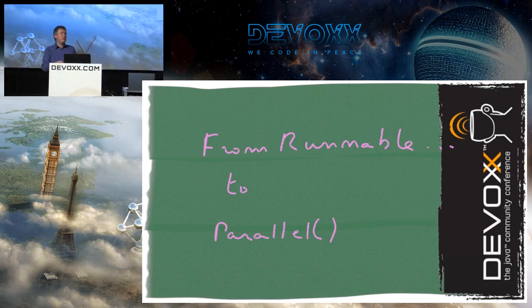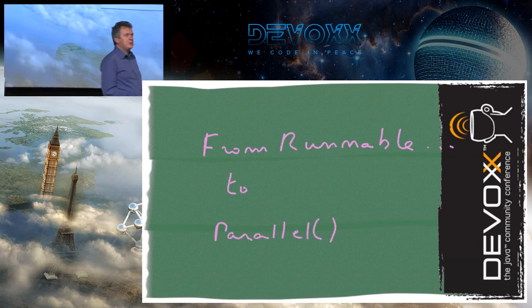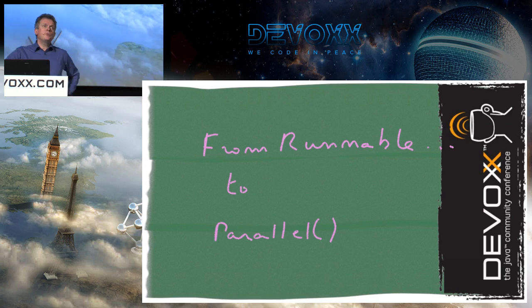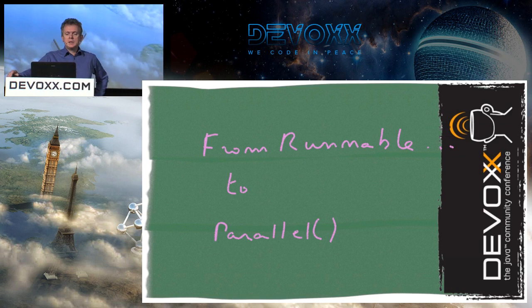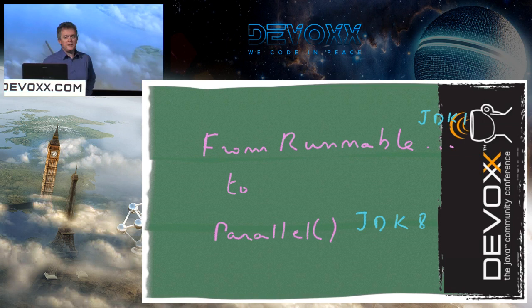Hello everybody, sorry for the little delay and thanks to the video guys who sorted out the problem very quickly. We are here to spend some time to talk about concurrency. I titled the talk 'From Renable and Synchronized to Parallel Atomically.' Renable and Synchronized is an old story — it's JDK 1. Parallel Atomically we don't have yet; it's part of JDK 8.